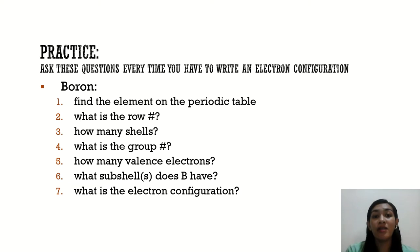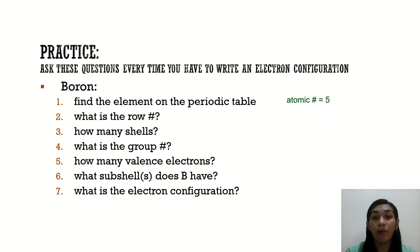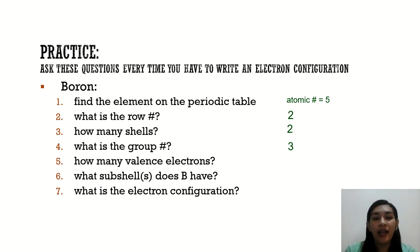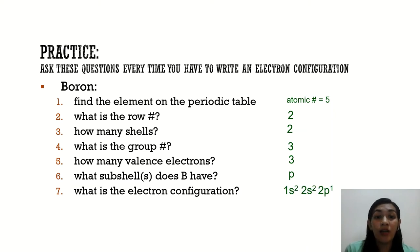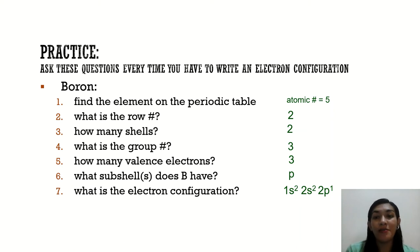Now let's have another practice with boron. Boron has atomic number 5 and is found at row 2, in the P block. Its electron configuration is 1s2, 2s2, 2p1. The 2s subshell is already filled with 2 electrons, and the P subshell has 1. Adding the superscripts: 2 plus 2 plus 1 equals 5, confirming the correct electron configuration.